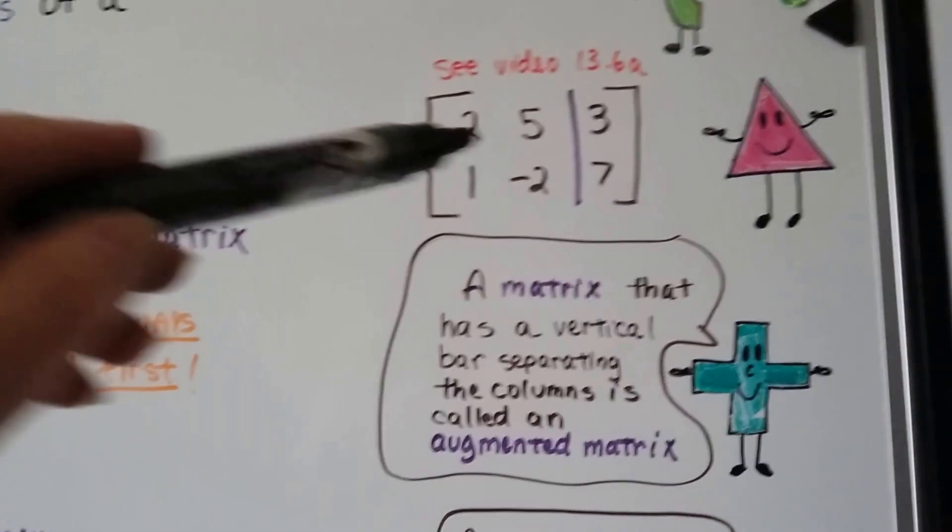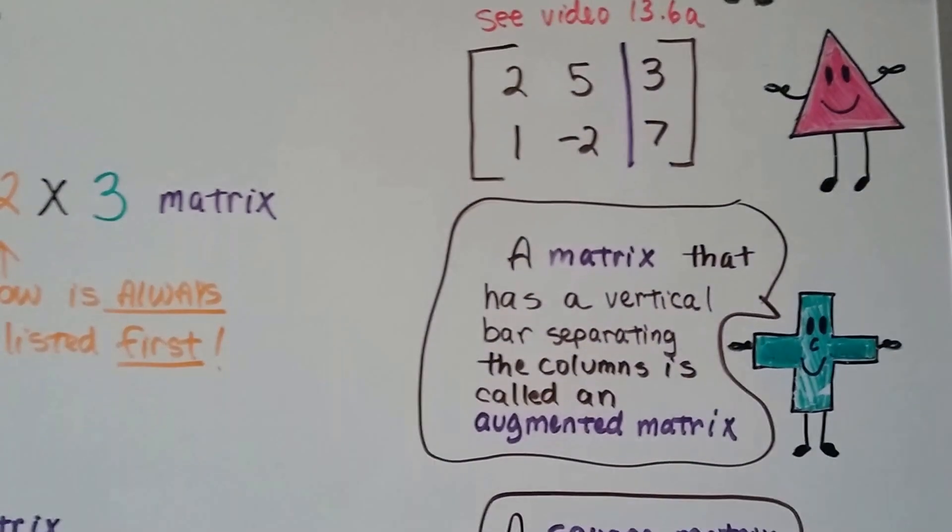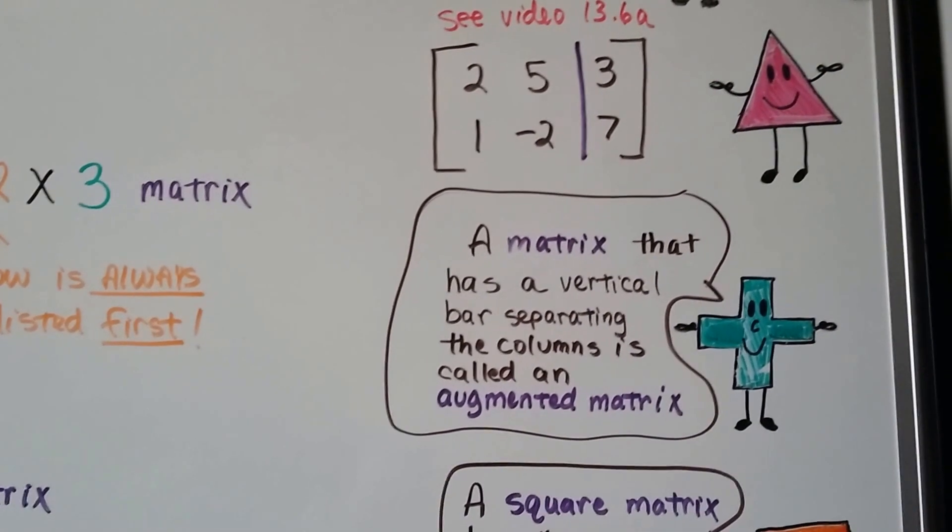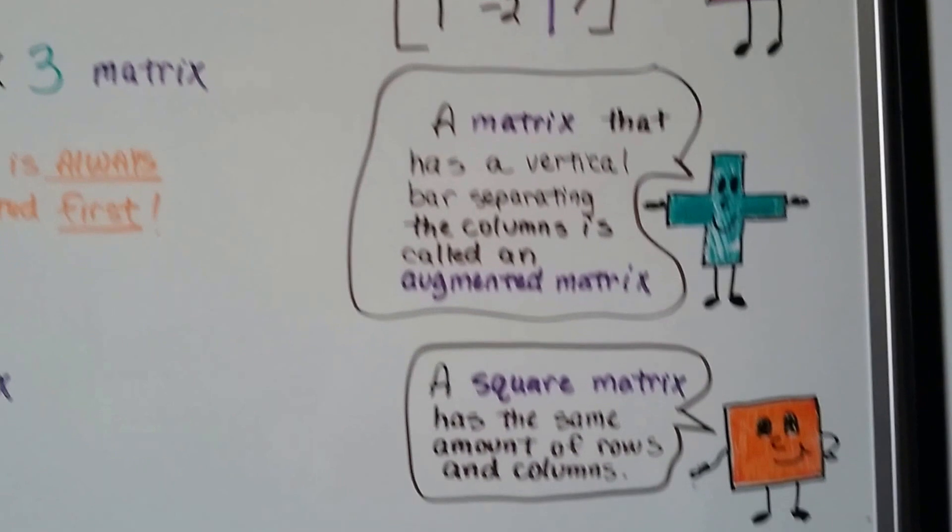Now, coming up, you're going to see a vertical bar that separates the matrix. A matrix that has a vertical bar separating the column is called an augmented matrix. We're going to talk about that in video 13.6a coming up soon.